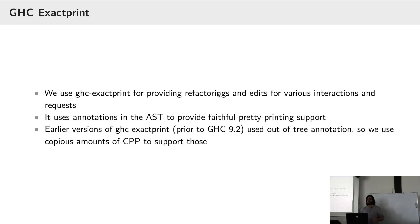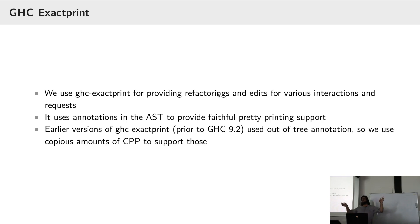Before GHC 9.2, these annotations lived outside of the AST, which was a different API, and we have a lot of CPP to support both ways of doing things. Hopefully once we can drop everything before 9.2, we can get rid of that. If you're writing new features, just use the new API and say old compiler versions aren't supported. But if it's easy to support all versions, it's worth doing.